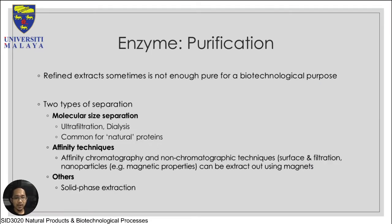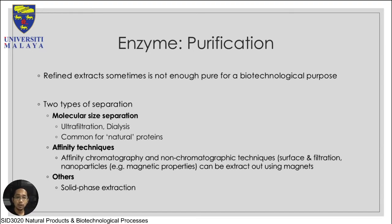For enzyme purification, what we've looked at also last week is the definition, purpose, and the types of separation normally used. We looked at molecular size separation - for example ultracentrifugation - and we also looked at affinity techniques, which is the histag-nickel approach, where a nickel column is used to purify a modified enzyme having a histag using affinity chromatography.